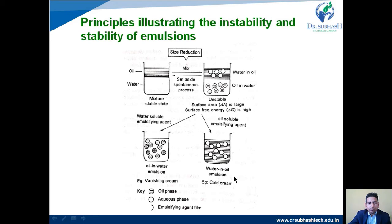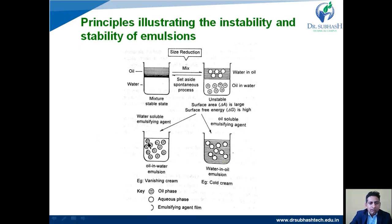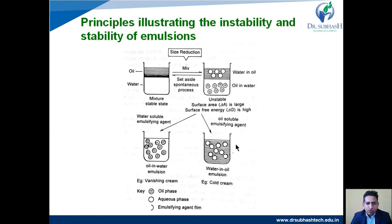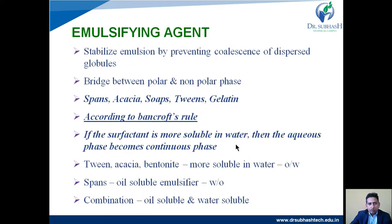If the small globules come closer and fuse together — four globules converting to two, then two to one — the system returns to a stable state. This demonstrates that emulsions are thermodynamically unstable: oil and aqueous phases always tend to separate from each other, which is why we need to add an emulsifying agent.